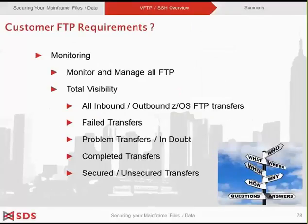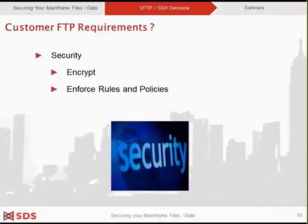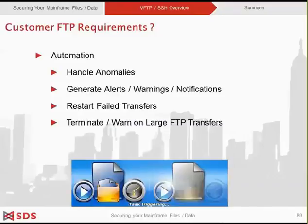Thank you, Tim. Hello everyone and welcome. Customers want the ability to monitor and manage all transfers — so inbound and outbound — from ZOS. They want to know when transfers fail and the reasons for the failures. They also want the breakdown of FTP traffic types being used on ZOS, including how much FTP is secured versus unsecured. Customers have the requirement to encrypt files and control access to restricted FTP commands. The ability to enforce company rules and policies is also a requirement, including handling anomalies, generating alerts and warnings about FTP transfers, and perhaps writing a message to the system console for other automation products to take further actions.